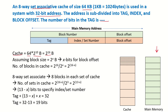Since the main memory block size is not given, we assume one block is 2 to the power of x bytes in size. To access any particular byte in this block, we require x bits for the block offset. So the main memory address requires x bits for the block offset, and since the block size is the same for the cache, x bits are also needed for the block offset in the cache.